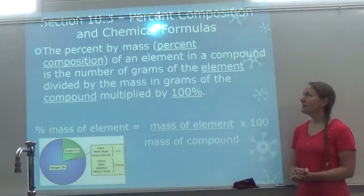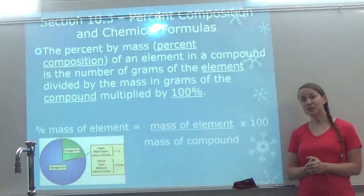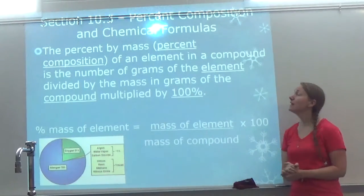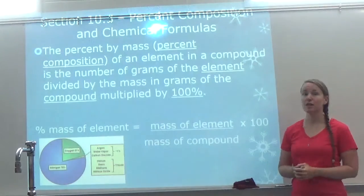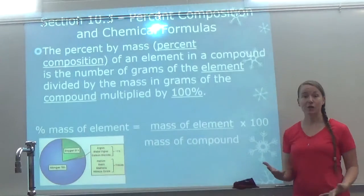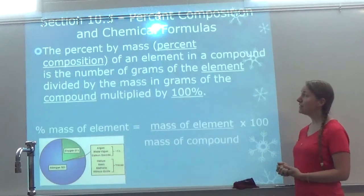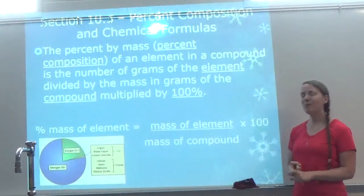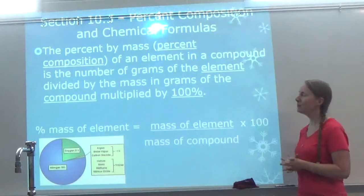This is our lesson video for section 10.3. Because the section is so incredibly long, it's going to be broken into three different videos. In our first video, we are going to focus on percent composition. I'm going to show you two different ways, depending on what information you're given, on how to solve these problems. Two things you'll want during this lesson video are a periodic table and a calculator. You possibly may also need a polyatomic ion sheet.